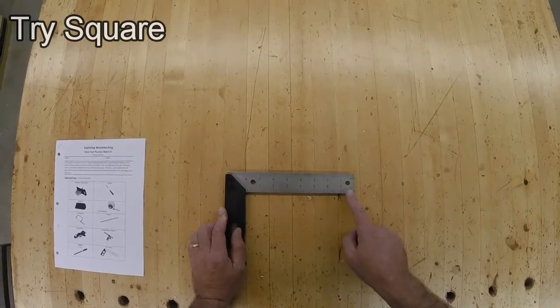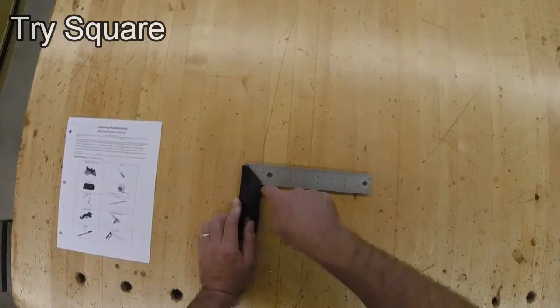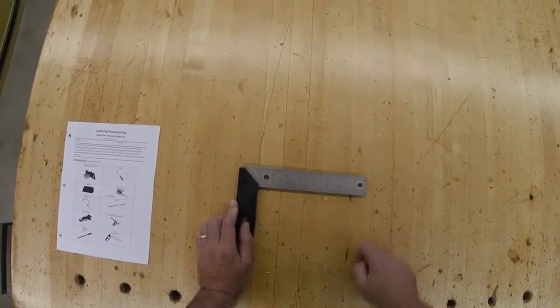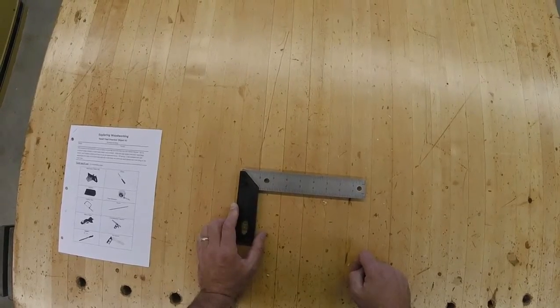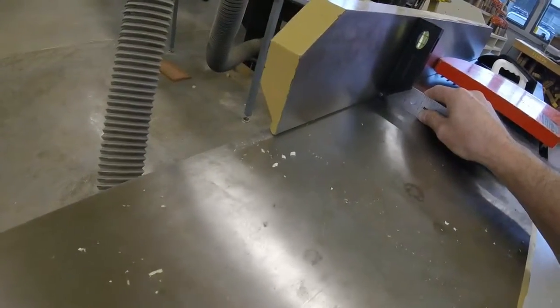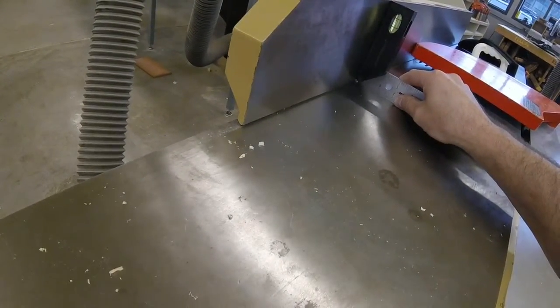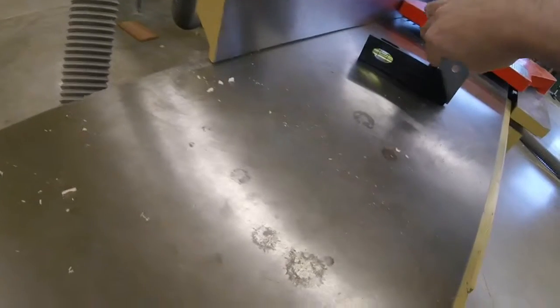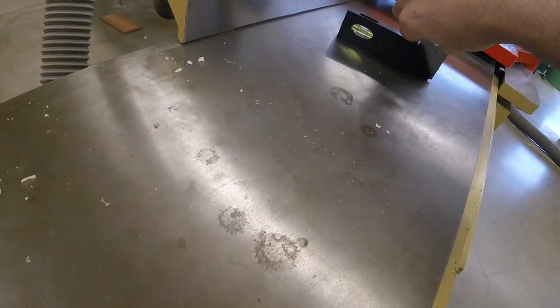We can use a tri-square for measuring lengths or thicknesses, and we can also use it for checking square. One thing we use a tri-square a lot for in this shop is checking the fences of tools, especially power tools. We want to make sure that our tool fences are perfectly square before we use them. And this tri-square also has a leveling bubble on it.